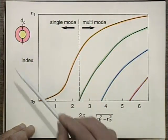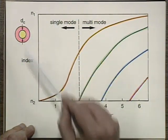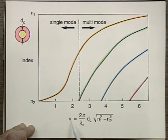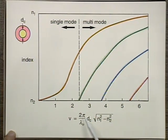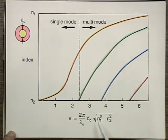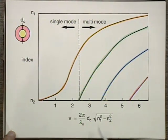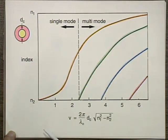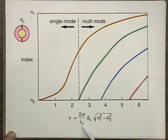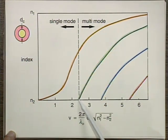Let's spend a couple of minutes on single-mode and multimode fibers. The core has index N1, higher than the cladding index N2. On the x-axis I'm plotting the V number — a parameter proportional to 1 over wavelength, times the core diameter D_c, times the square root of N1 squared minus N2 squared. When this V number is below about 2.4, you only get single-mode propagation — all other modes have too much loss and don't propagate. Single-mode fiber is one where the V parameter, determined by core size, wavelength, and index difference, is smaller than 2.4.